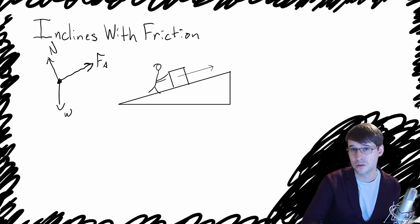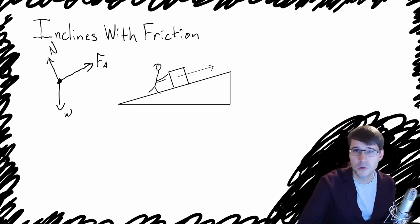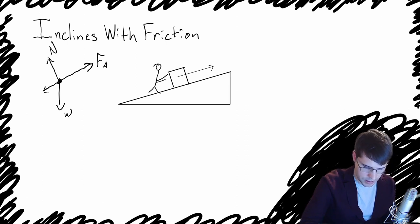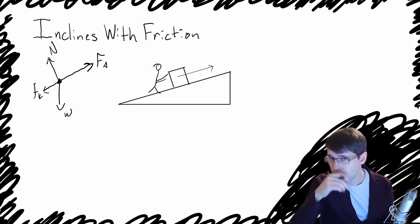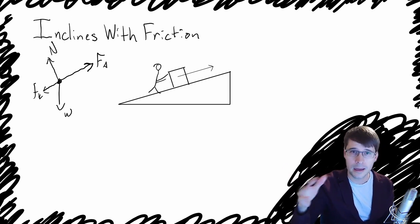We're going to have a friction force in this case. Since the block is going to be moving up the hill — they're pushing it up the hill hard enough that it's actually moving up — there's going to be a friction force that's downhill. It's going to be a kinetic friction because the block is sliding. You'll notice that the normal force, the applied force, and the friction force are all at right angles to one another, and the weight is not.